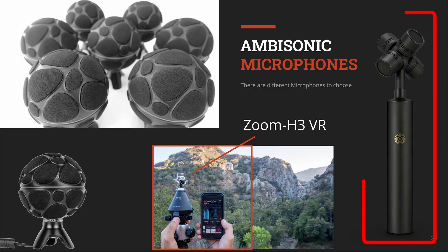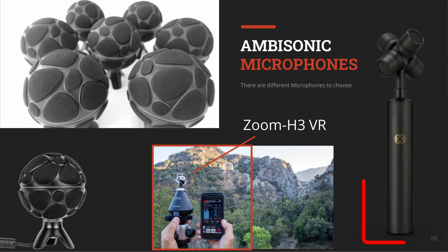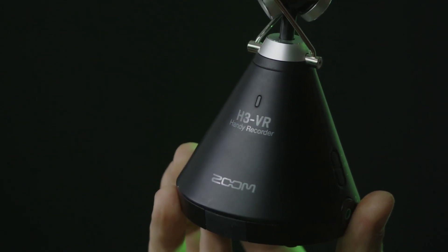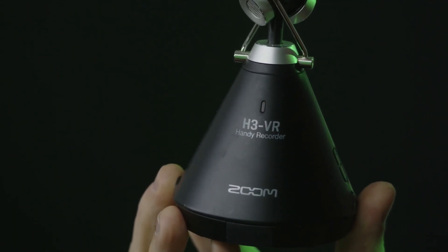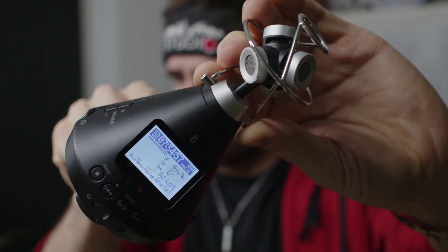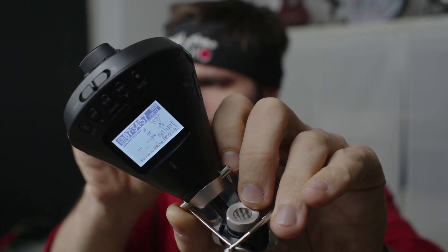Ambisonics B format is what you're going to use in your editing software. So if you have a microphone that records Ambisonics A format, you want to process that into Ambisonics B format. This is why I love this microphone — the Zoom H3 VR recorder. It has a built-in gyroscope and does the conversion to Ambisonics B format automatically. So it knows which way is up and which is down depending on how you mount it, because rotating this sound in post can be tedious.